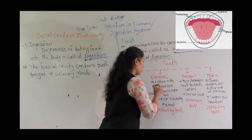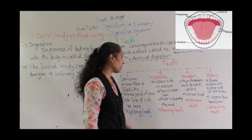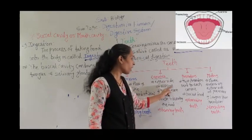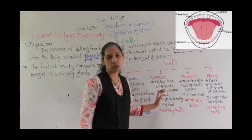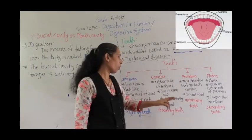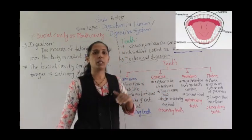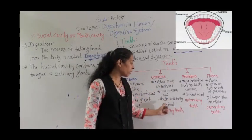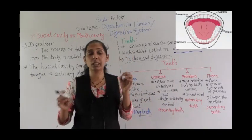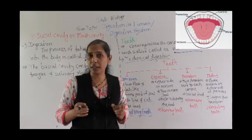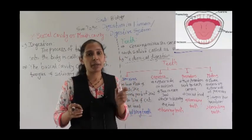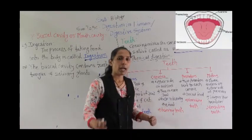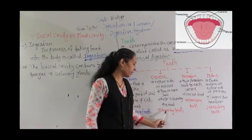The next type is canines. Canines are present on either side of the incisors — two in each jaw, meaning two in the lower jaw and two in the upper jaw. Canines help in tearing the food because they are very sharp and pointed teeth. That is why canines are called tearing teeth.